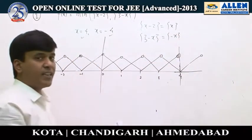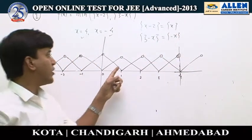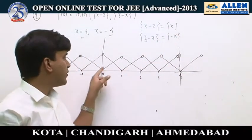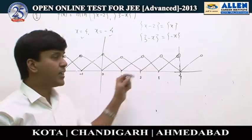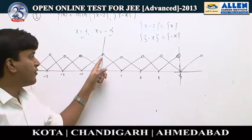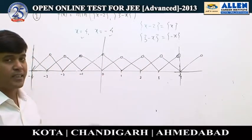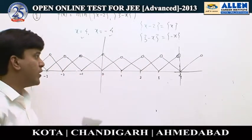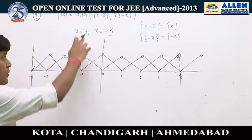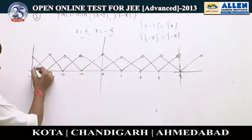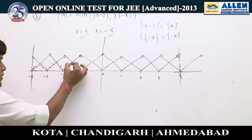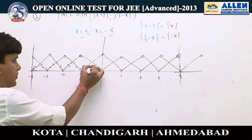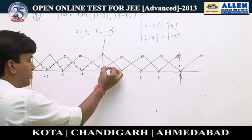So we sketch the graph of fractional part of x — it looks like this — and then we sketch the graph of fractional part of −x. Now we have to find the area of the minimum of these two, so the minimum corresponds to this shaded portion.